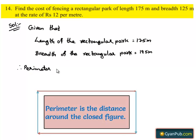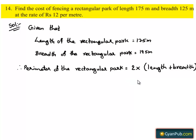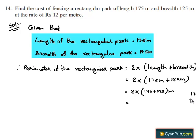Therefore, perimeter of the rectangular park is equal to 2 times the sum of length plus breadth, since we know that perimeter of a rectangle is 2 times the sum of its length and breadth. This is equal to 2 times (175 + 125) meters. 175 plus 125 gives 300, so perimeter equals 2 times 300 meters, which gives the perimeter as 600 meters.